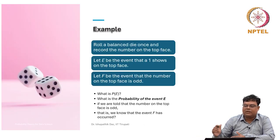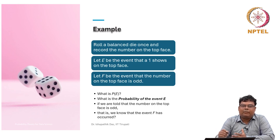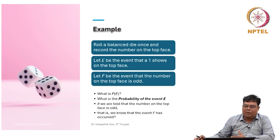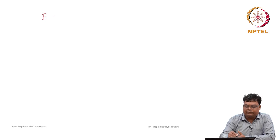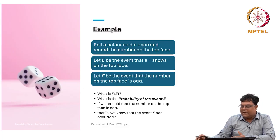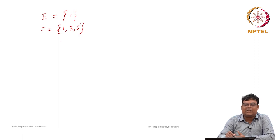Let us do a numerical example. Suppose we roll a balanced die once and record the number on the top face. A balanced die means all faces are equally likely with probability 1/6. Let E be the event that 1 occurs on the top face — so E = {1}. Let F be the event that the number on the top face is odd — so F = {1, 3, 5}.